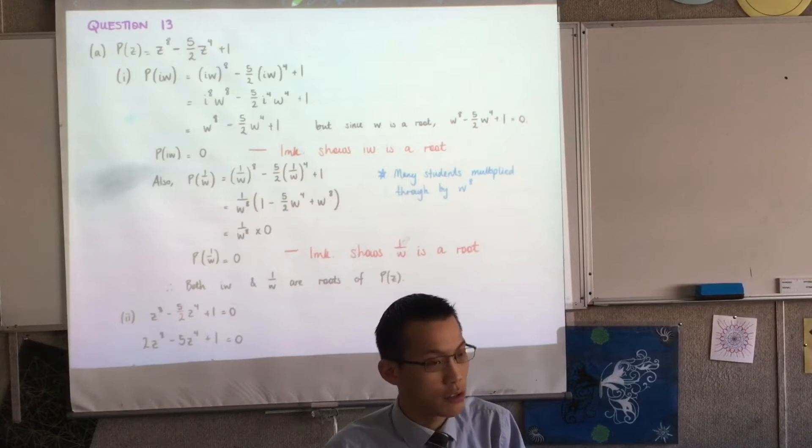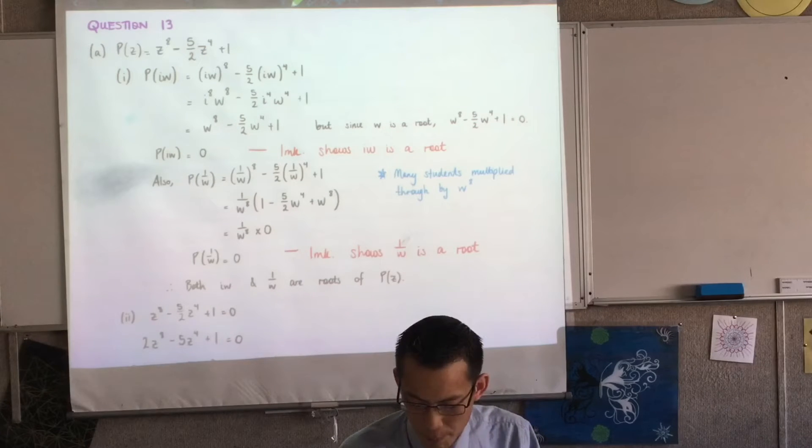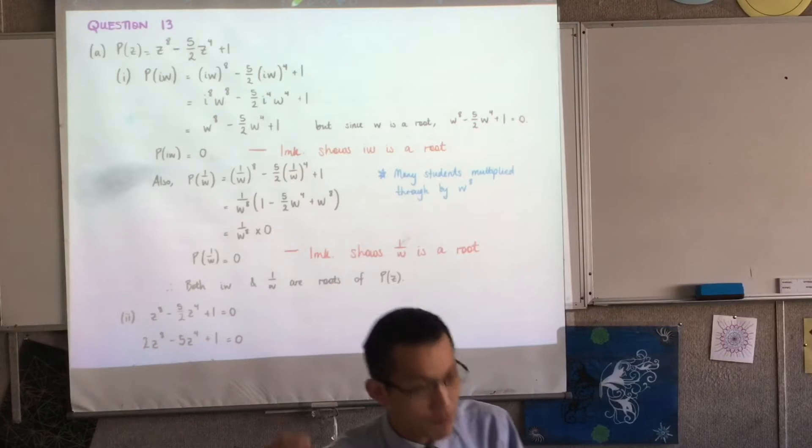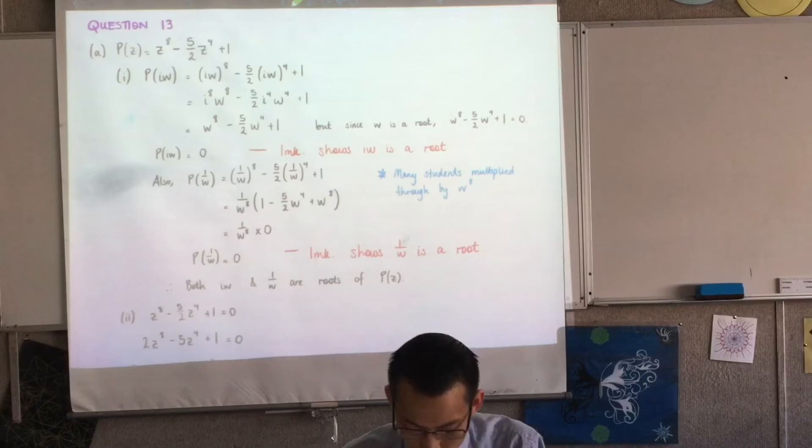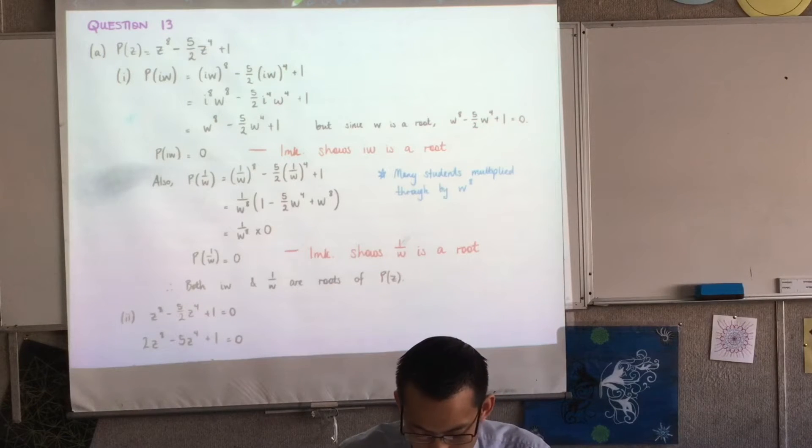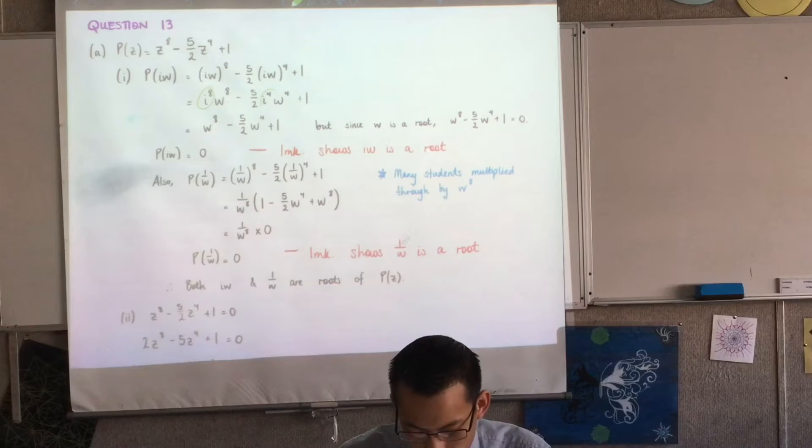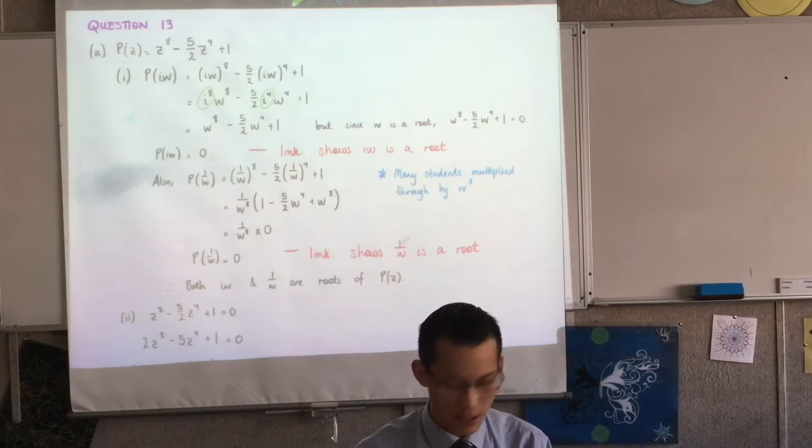So most people got, right, I'm supposed to use the factor theorem here. Most people said okay, I'll substitute in iw, I'll give that a go. And when you can see your i to the 8, your i to the 4, we know that those simplify out, so that was fine.